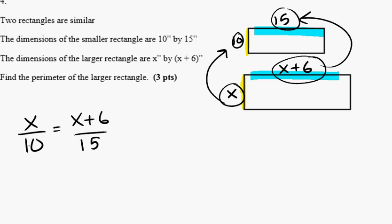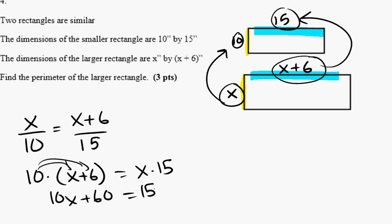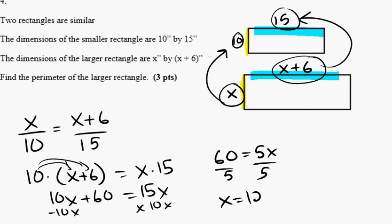So using the means-extreme product theorem, we know that 10 times x plus 6 equals x times 15. Distributing the 10, 10x plus 60 equals 15x. Subtracting 10x from each side will result in 60 equals 5x. And we know that x equals 12.